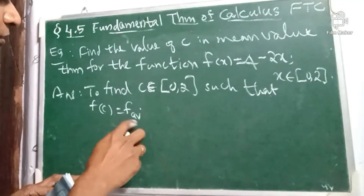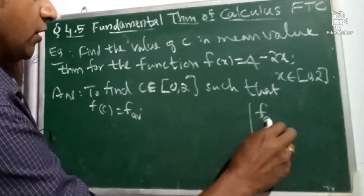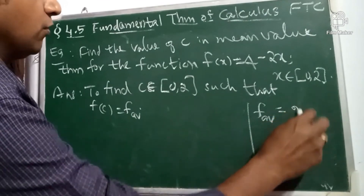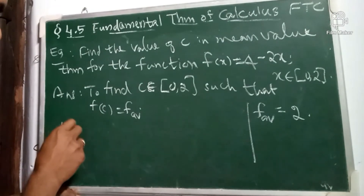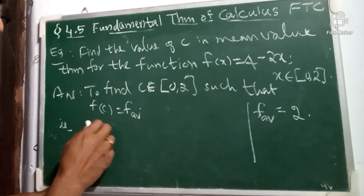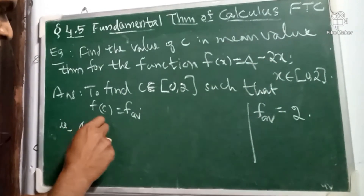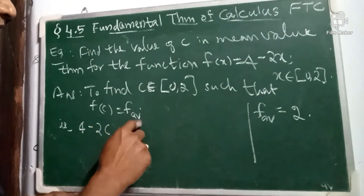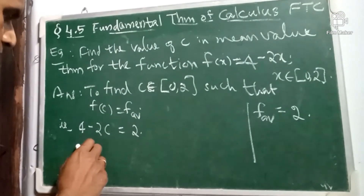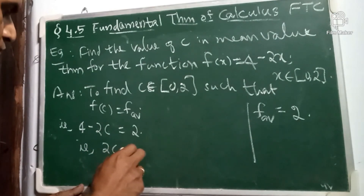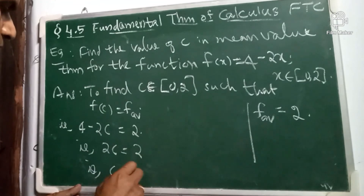From the previous problem, f average is equal to 2. So we want c such that f(c) equals 2, that means 4 minus 2c equals 2. That gives 2c equals 2, so c equals 1.